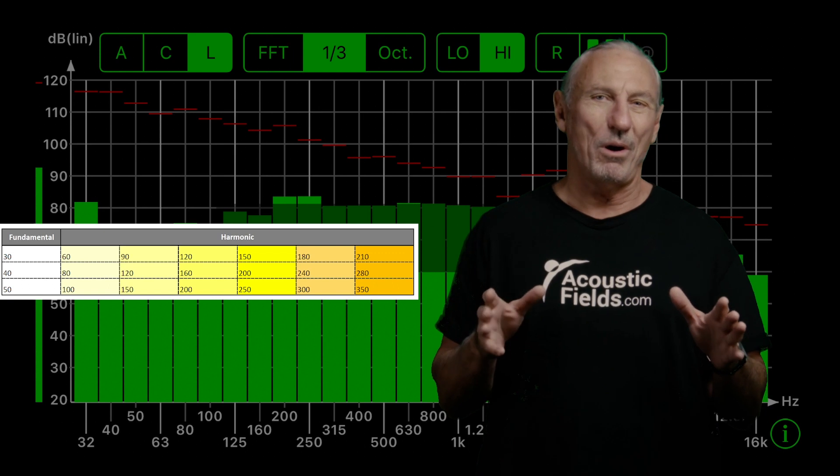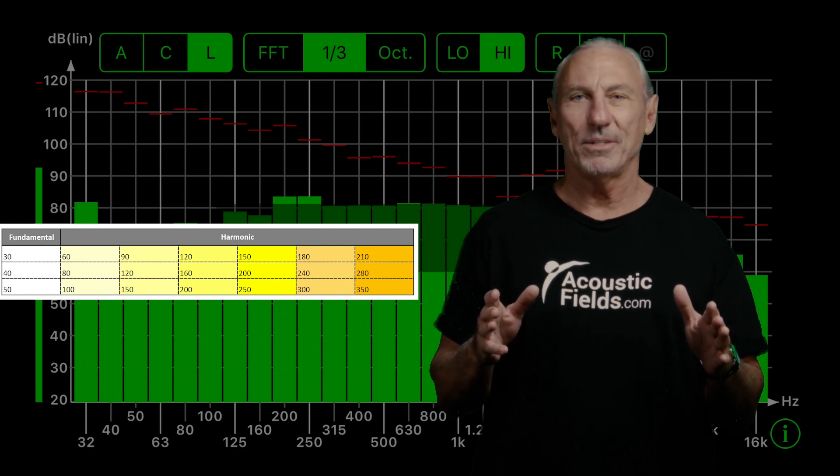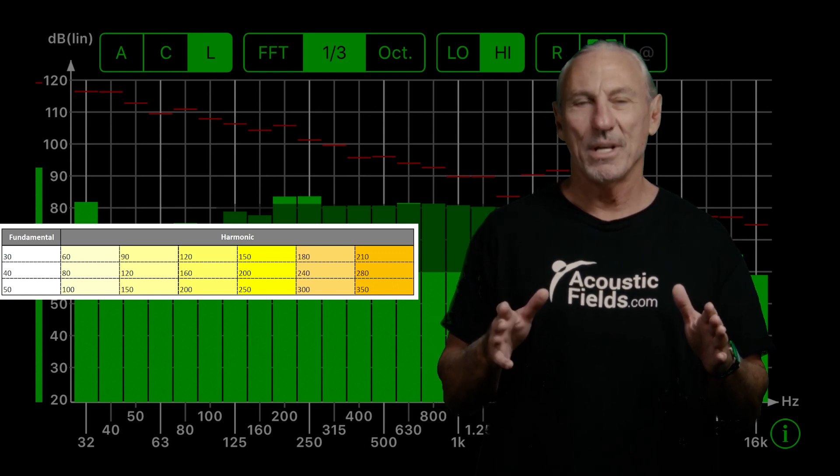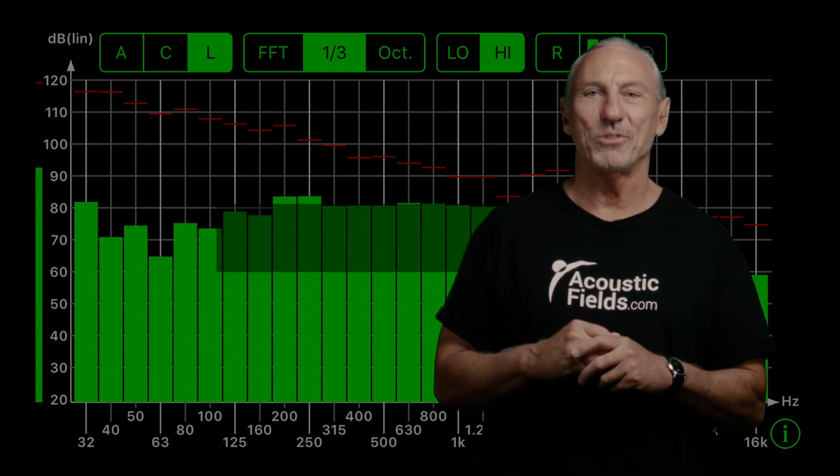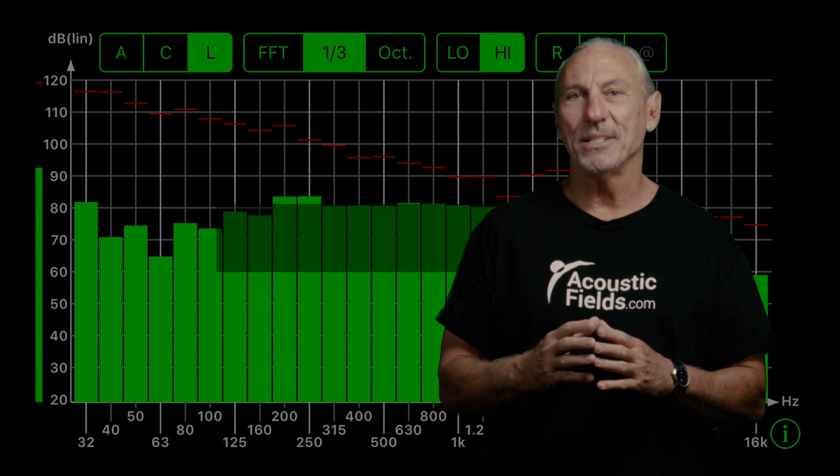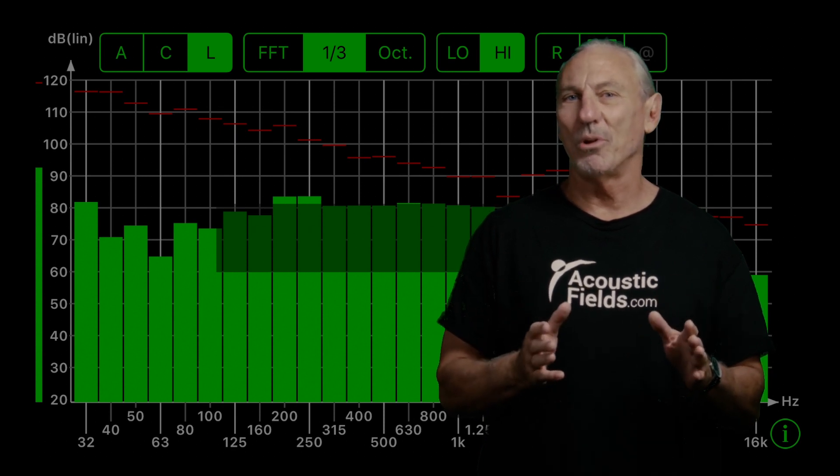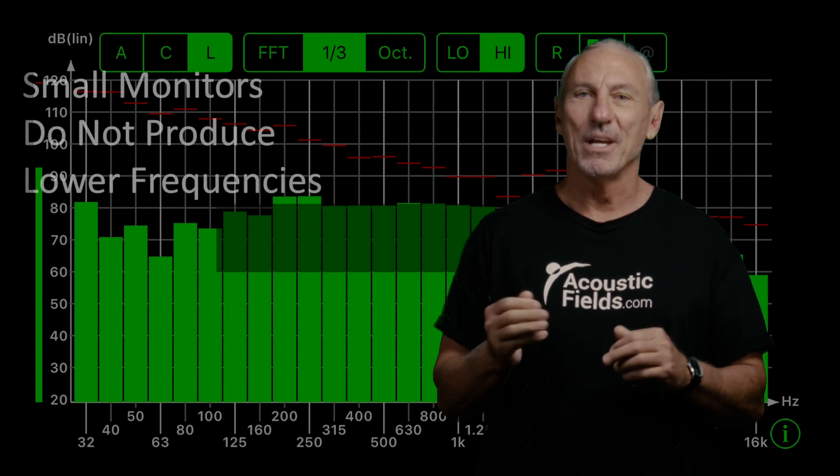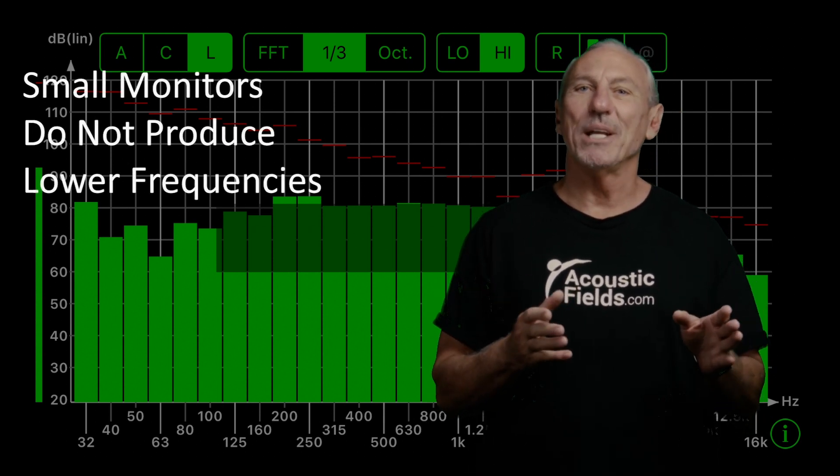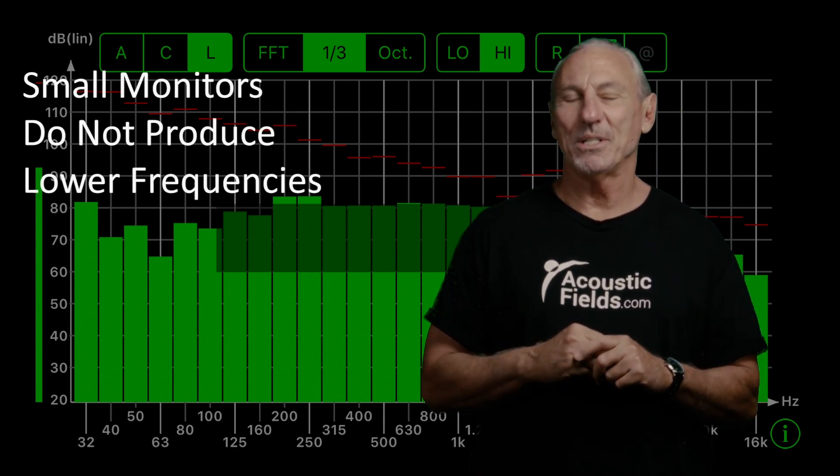Now we know we all have these small monitors, especially the pros have these small monitors on our desks, the five-inch, the six-inch drivers, the little two-ways, and usually those roll off of like 50, 60 cycles roughly, somewhere in that range. So they're not going to produce any energy below 50 or 60 cycles.